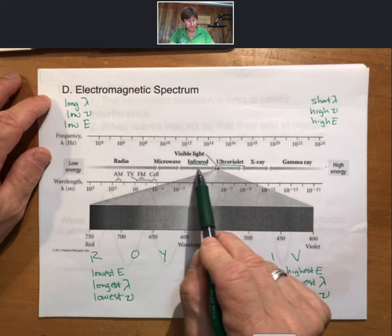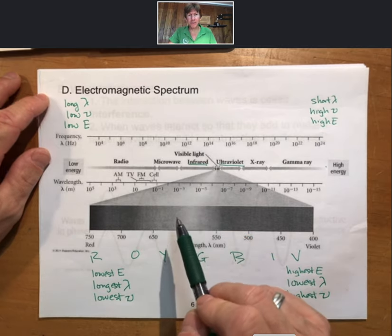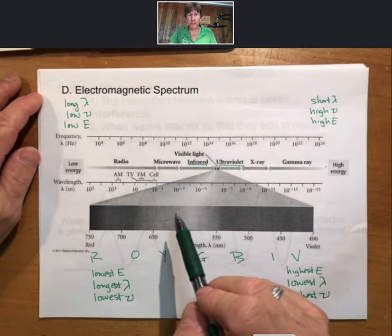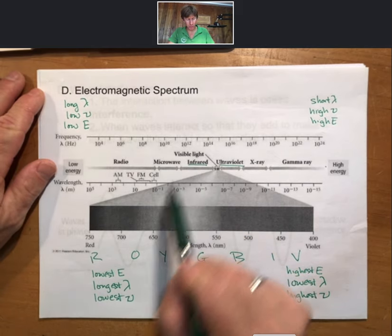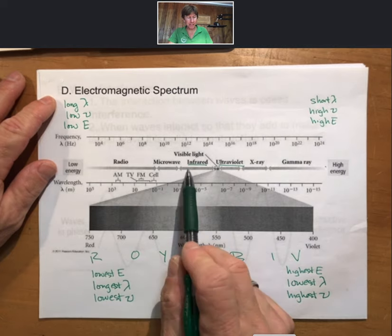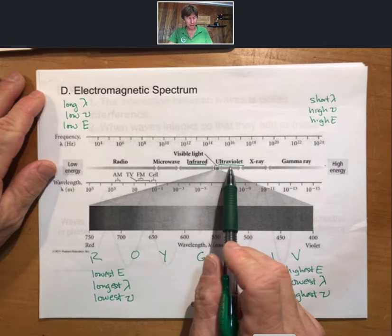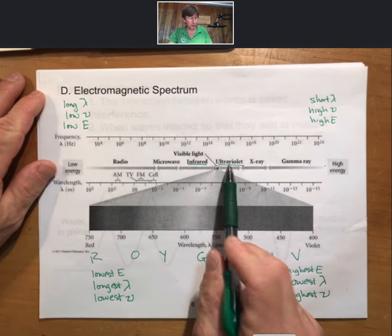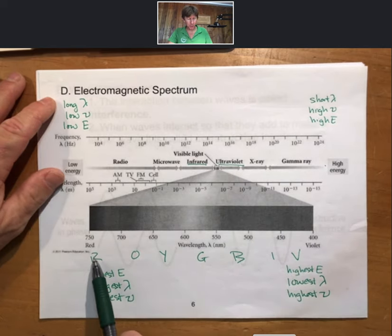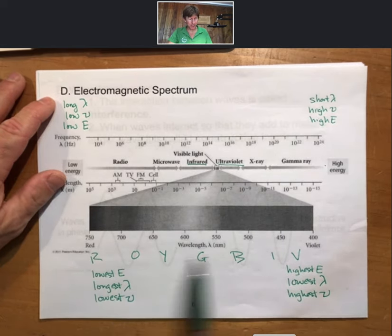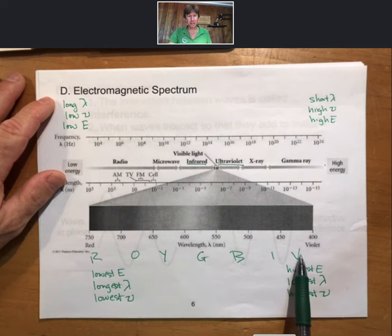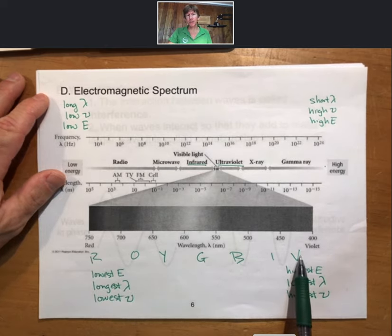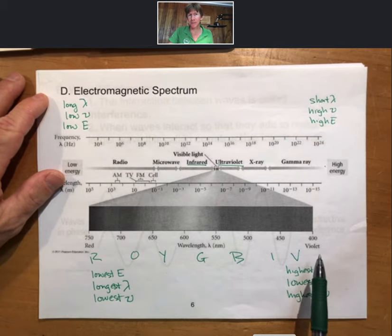Now, what do you have to know as far as the order of these and their energies? You have to know that infrared has longer wavelengths than red and is a lower energy. You have to know that ultraviolet is higher energy than violet. And you also have to know ROYGBIV as you go from red to orange to yellow down to violet. The order of the energies and wavelengths, you don't have to know the exact numbers, just the order.